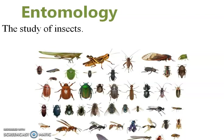You also learn which insect attacks which crop at which stage, and how to control insects using different methods like biological control and chemical control. Under chemical control, you study different types of insecticides and how to spray them, including different types of sprayers. All this important knowledge is provided in the subject Entomology.